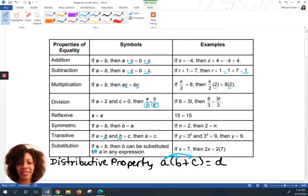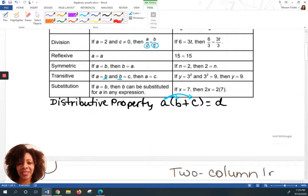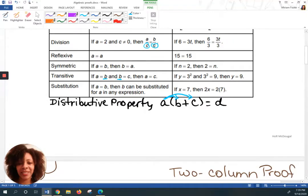Substitution. If A equals B, then B can be substituted for A in any expression. You're saying they're the same. A is B. So if X is equal to 7, that means every time I see an X, I'm going to replace it with that 7. And that's what they did. So 2X became 2 times 7 because it's no longer X. So this is a rundown of your properties of equality. Let's get to some examples so we can try to justify our steps.